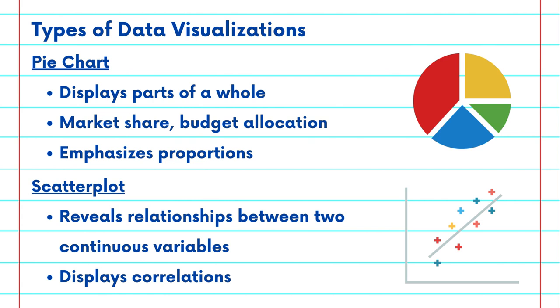Scatter plots reveal relationships between two continuous variables. They are ideal for displaying correlations, like the relationship between height and weight.